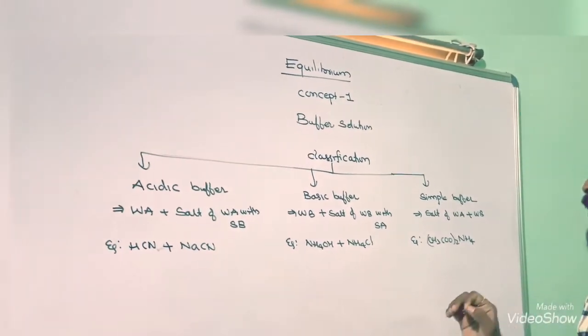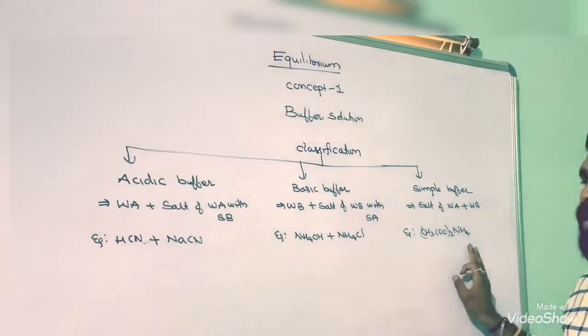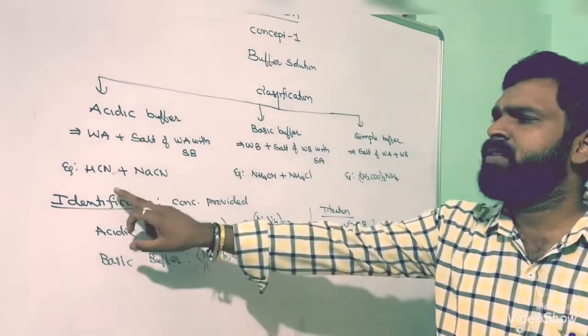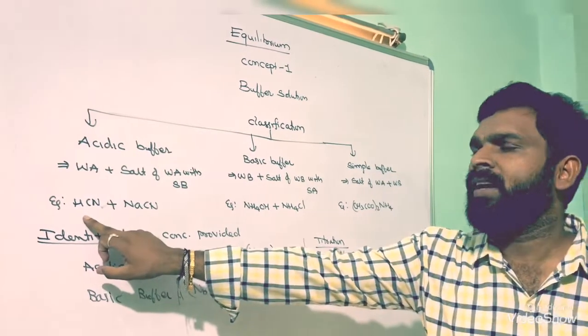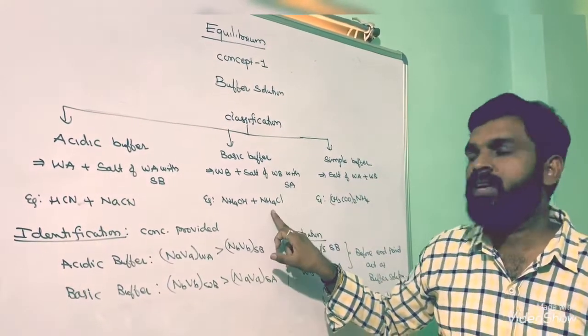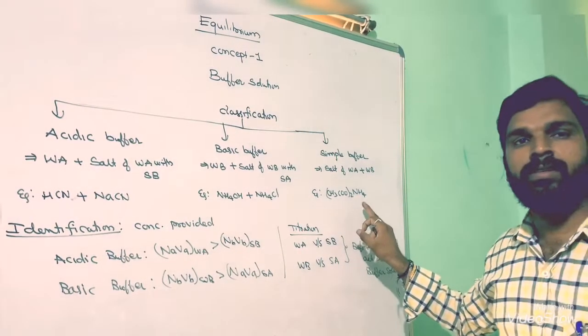Example: ammonium acetate. Identification of buffer solutions: We can easily identify if they are given as weak acid and salt of weak acid, weak base and salt of weak base, and salt